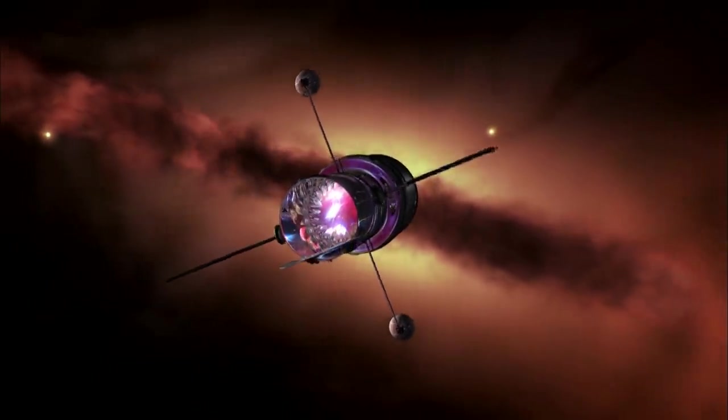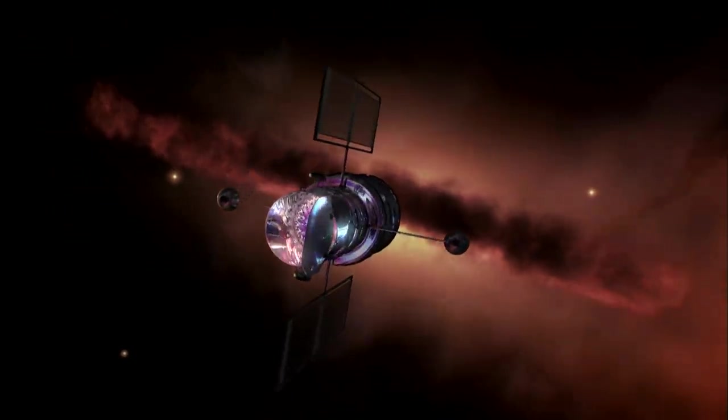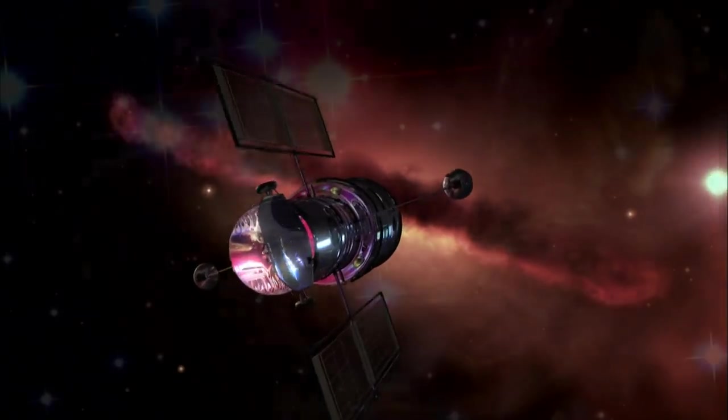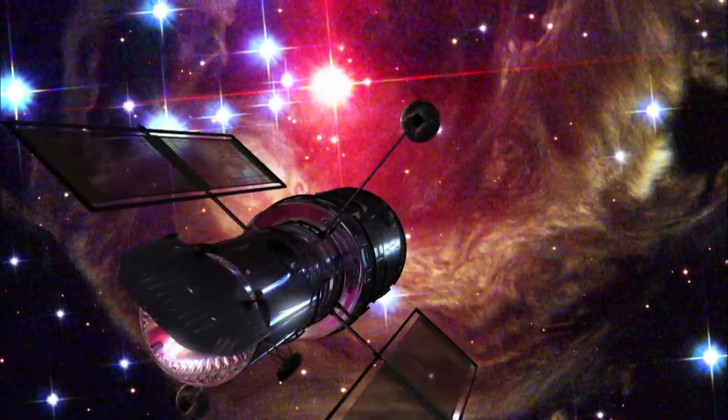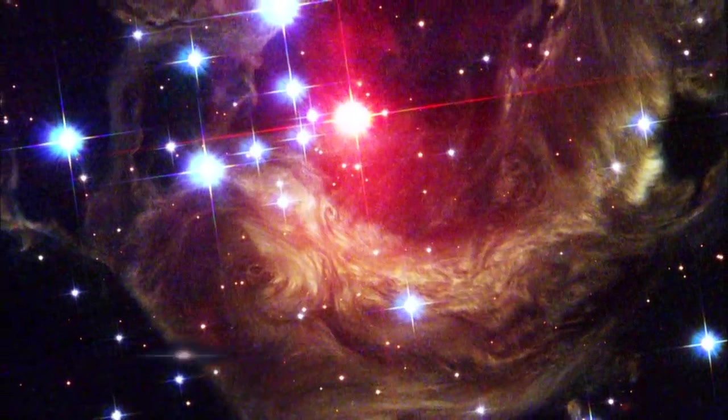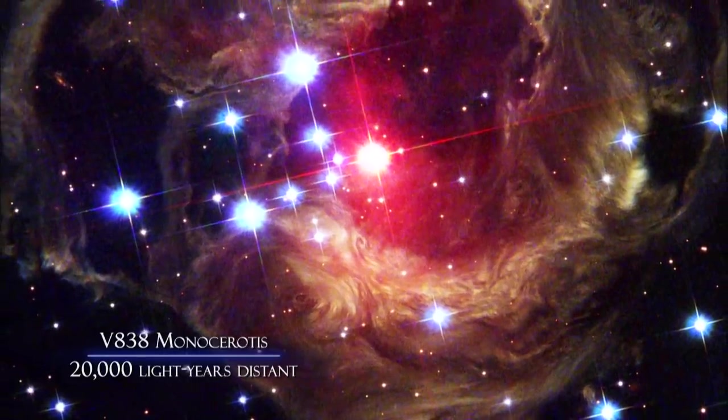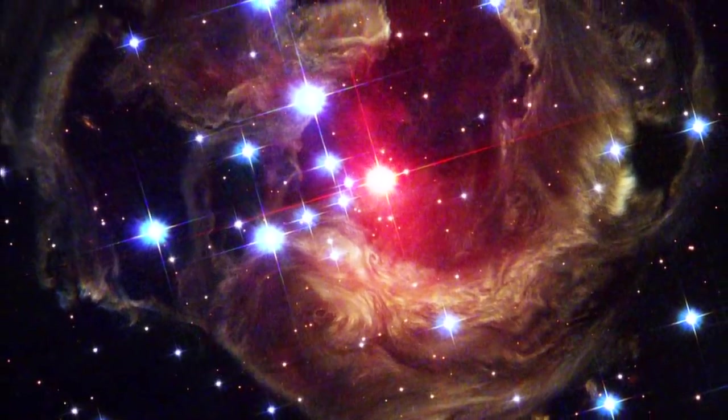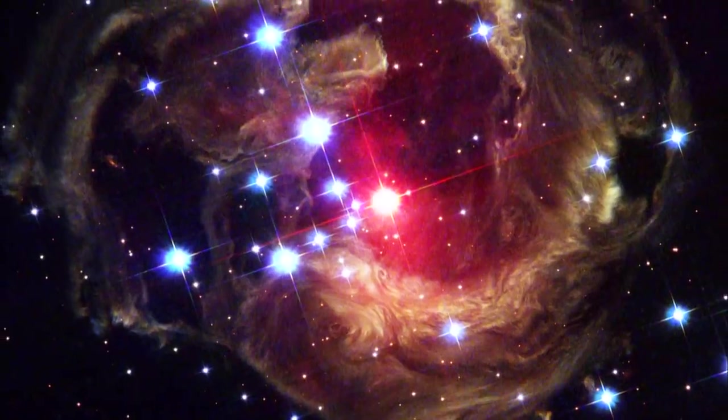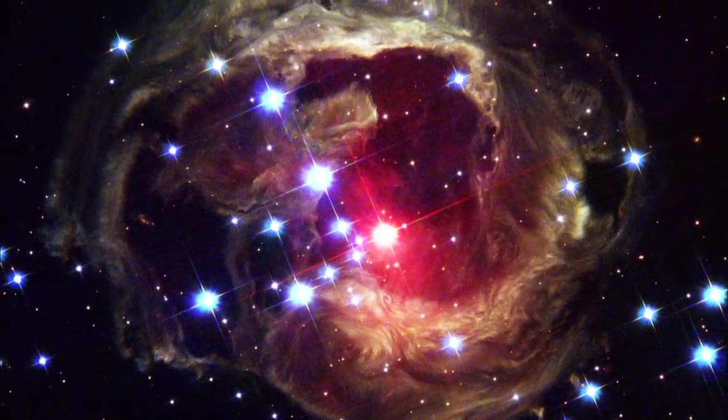To witness this remarkable spectacle, the Hubble cast its gaze across our home galaxy, the Milky Way, to a star so brilliant and so distant, its light takes 20,000 years to reach us. Normally, such a star would appear as nothing more than a faint speck of light. But this star is a giant, one of the brightest in our galaxy.